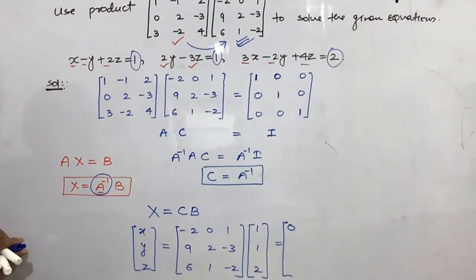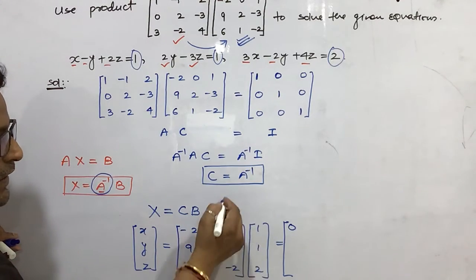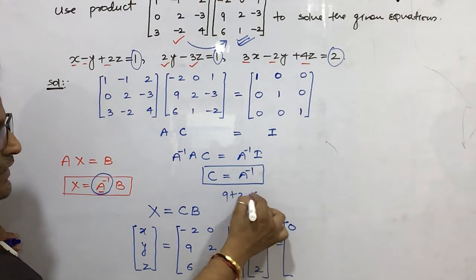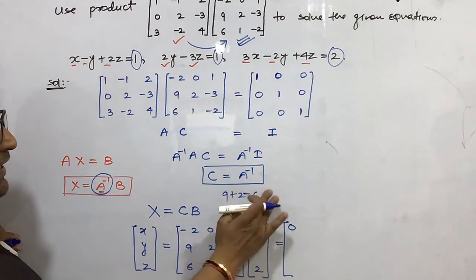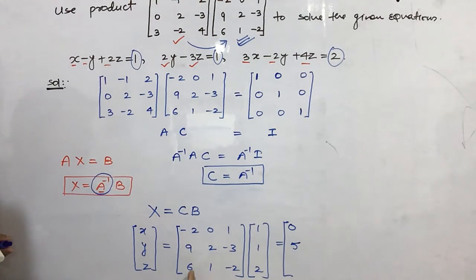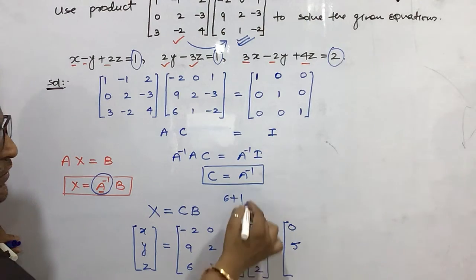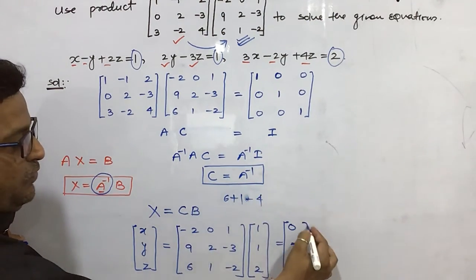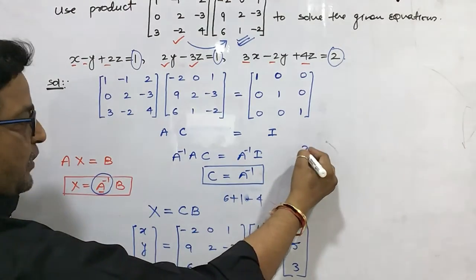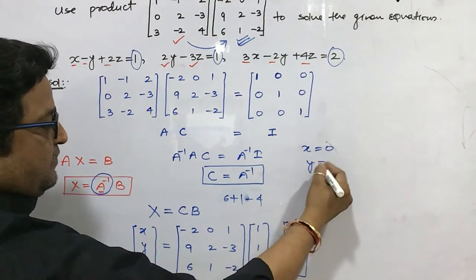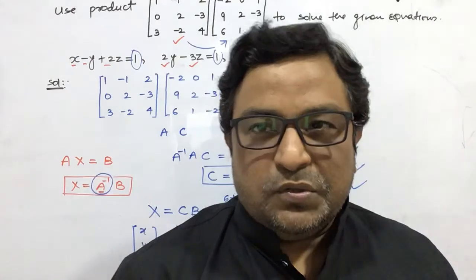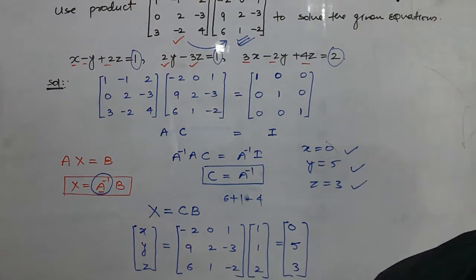Moving to the second element: 9×1 + 2×1 + (-3)×2 = 9 + 2 - 6 = 5. The third element: 6×1 + 1×1 + (-2)×2 = 6 + 1 - 4 = 3. So the value of x is 0, y is 5, and z is 3. In this way you use the product of two matrices to find the solution of the given system of equations.